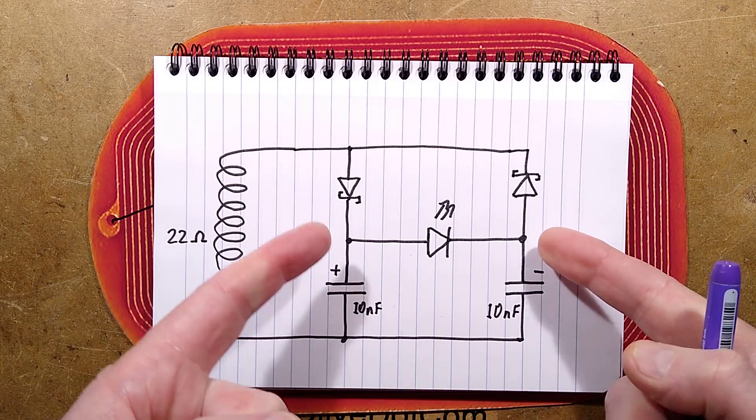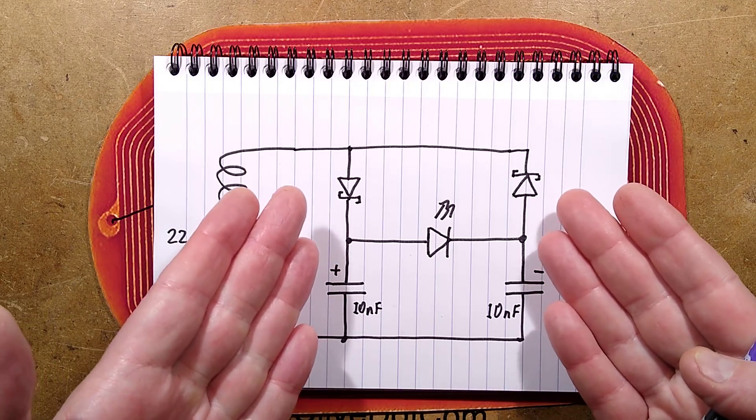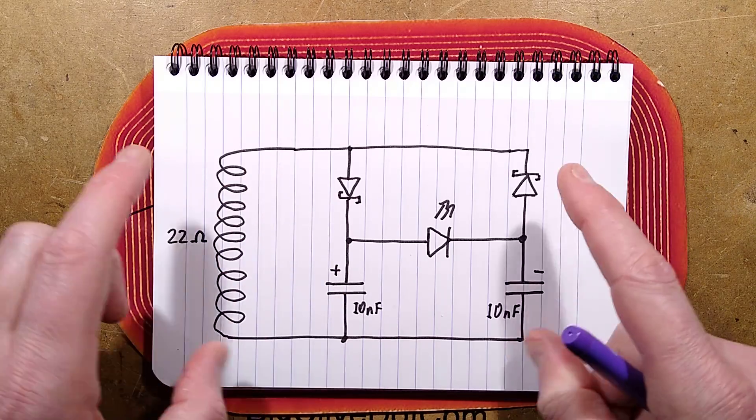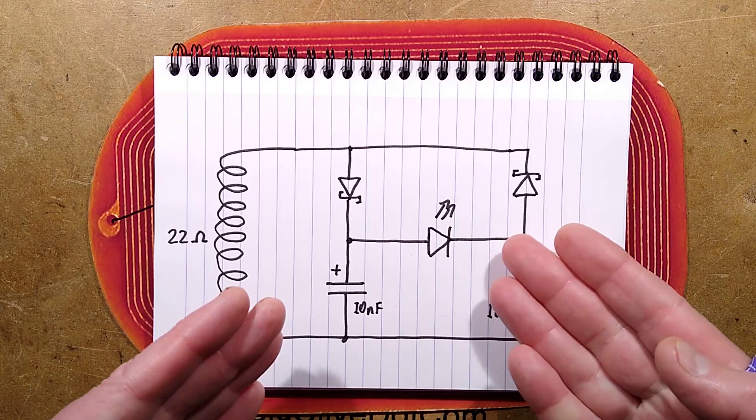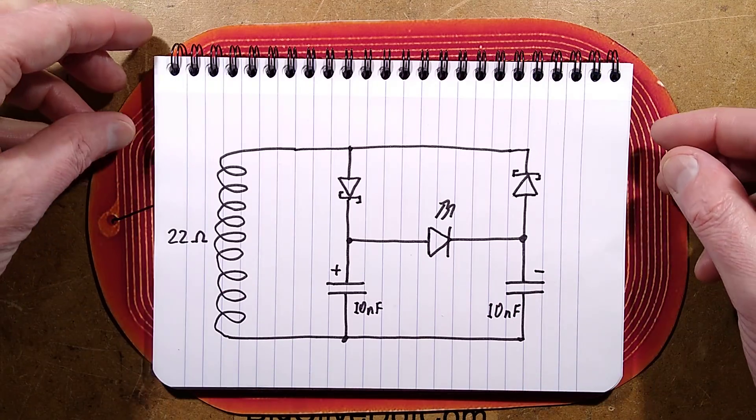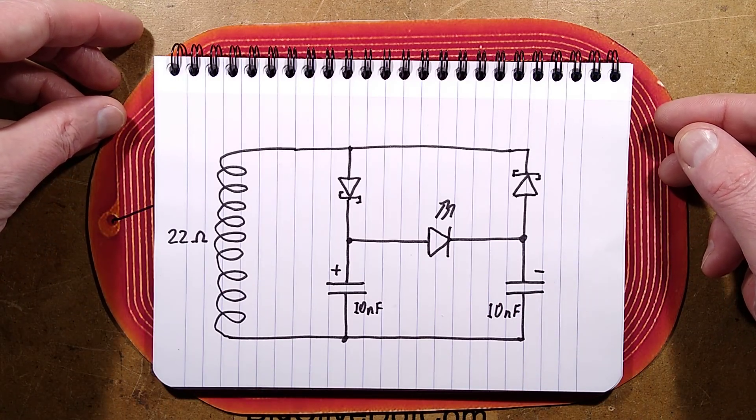The LED is across those. So any energy imparted from the coil into these capacitors, it goes through the LED and makes it blink. That is fundamentally it. There's not much to it. It's a very, very simple circuit.